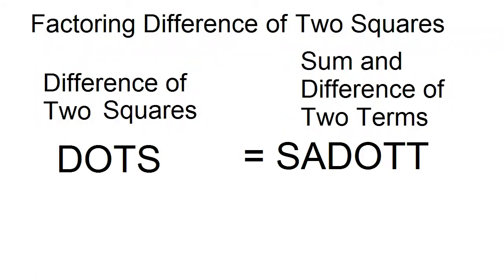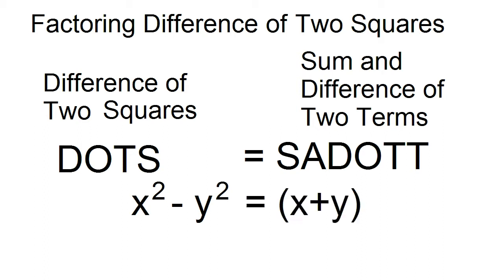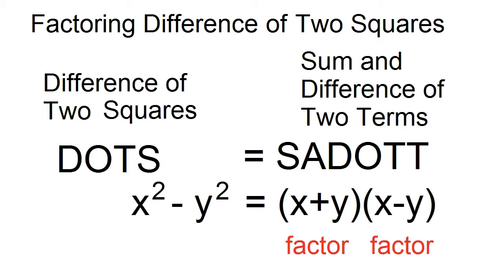Factoring Difference of Two Squares. This is the form of difference of two squares: x squared minus y squared. The factors are x plus y and x minus y.